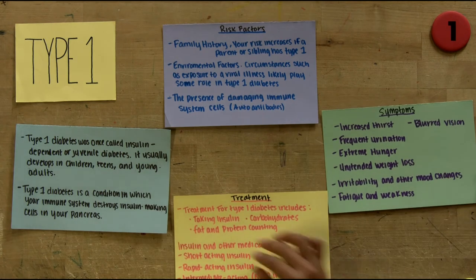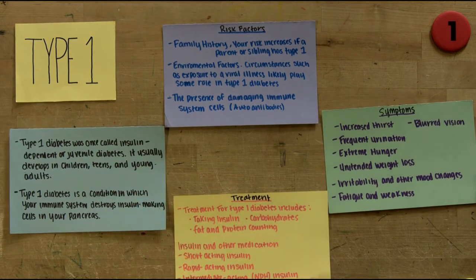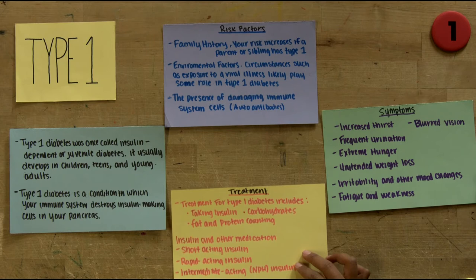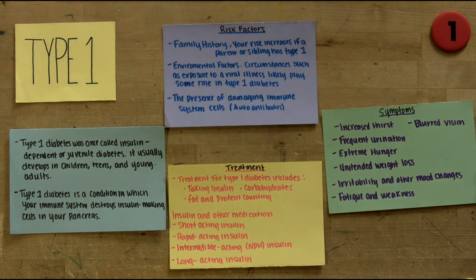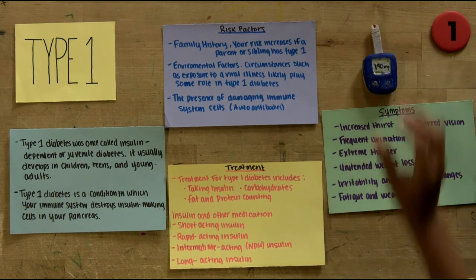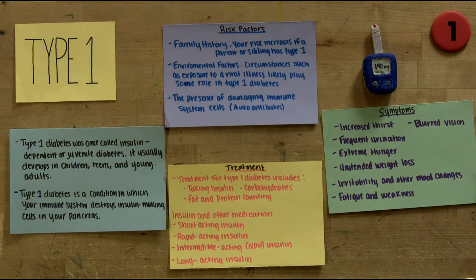Treatment for Type 1 diabetes includes taking insulin, carbohydrate, fat, and protein counting, and other medications such as short-acting insulin and rapid-acting insulin.